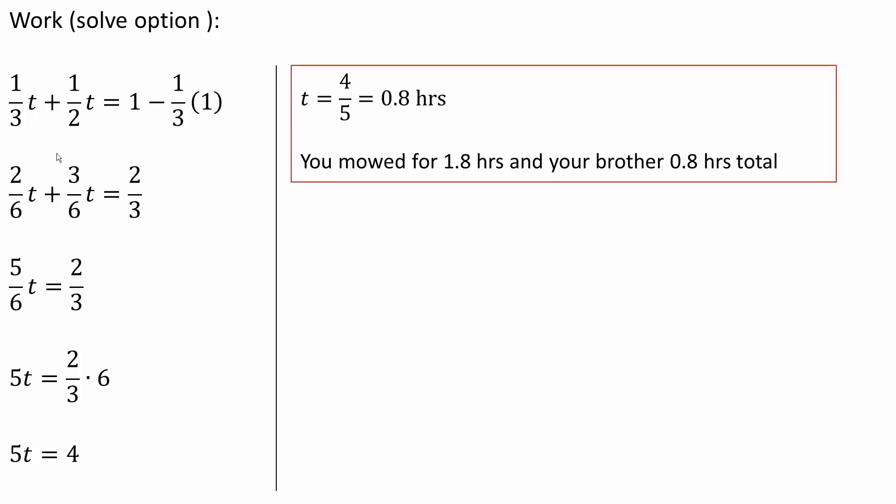Here I'm getting a common denominator. I multiply this by two and get 2/6t. Here I multiply this by three and get +3/6t = 2/3.